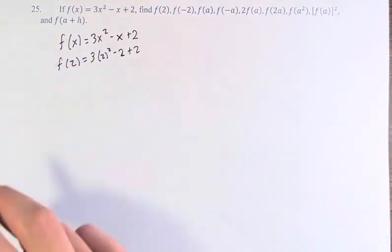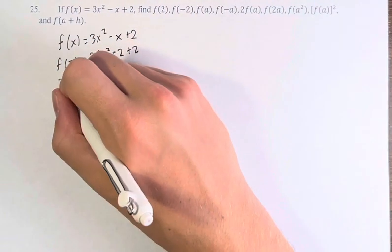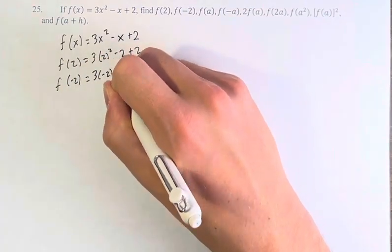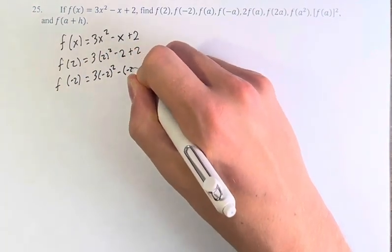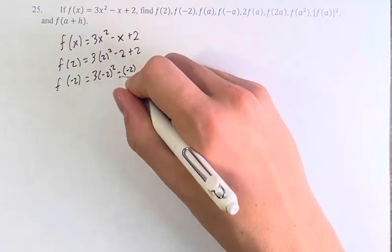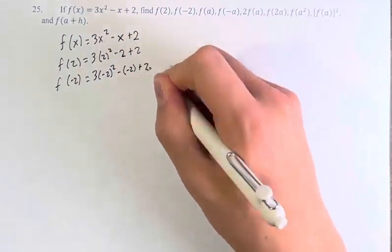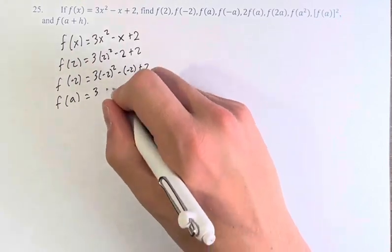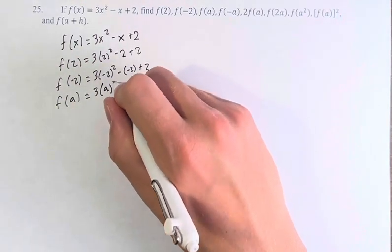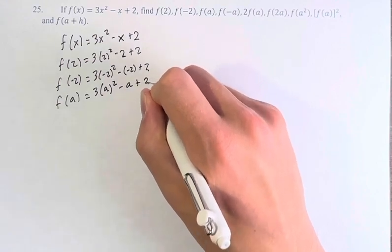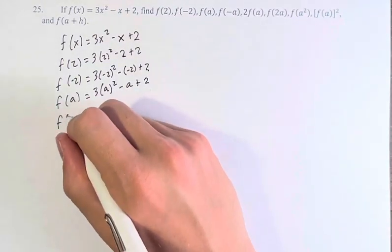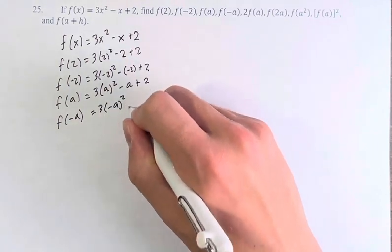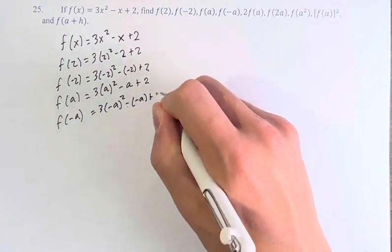f of negative 2, we're just plugging in negative 2 wherever we see an x. Right, so it becomes minus x minus minus 2. f of a, we don't only plug in numbers, we can also plug in variables. f of negative a, we can also do things to those variables, and then plug them in.